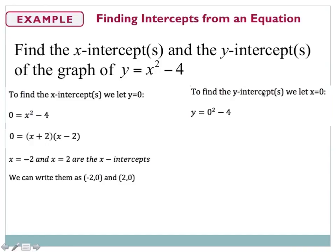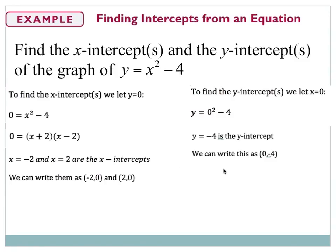To find the y-intercept, let x = 0: y = 0² - 4 = -4. Write this as the coordinate (0, -4). So listing all intercepts for y = x² - 4, we have (-2, 0), (2, 0), and (0, -4), where each coordinate is enclosed in parentheses.